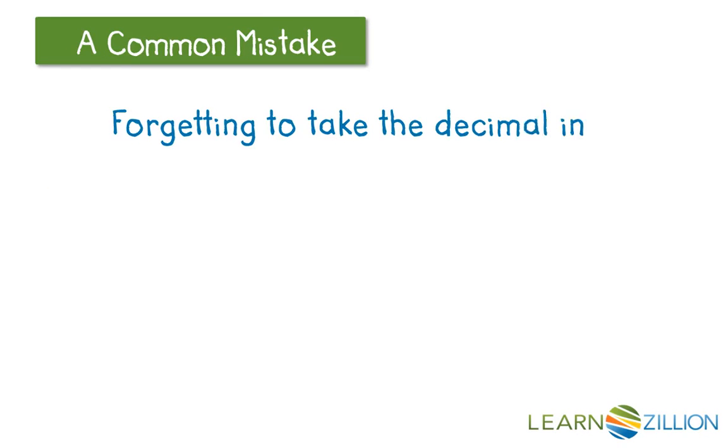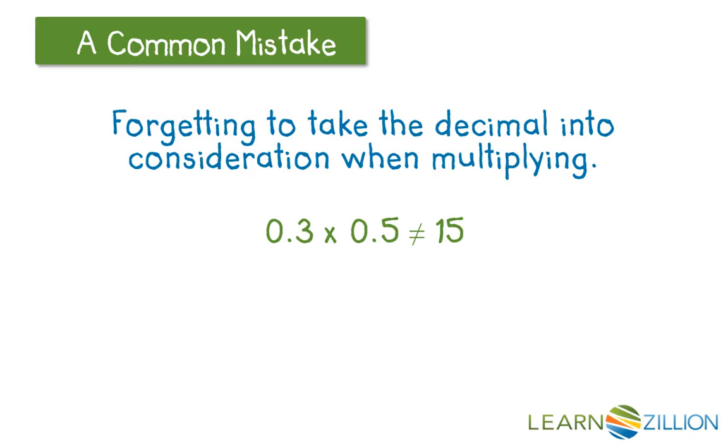A common mistake that a lot of people make is forgetting to take the decimal into consideration when multiplying. So when you're multiplying 3 tenths times 5 tenths, we're not going to get an answer of 15. That just wouldn't make sense.